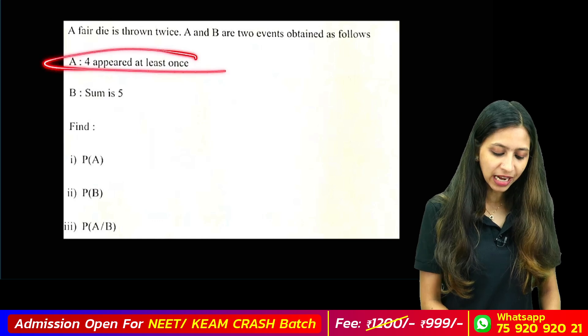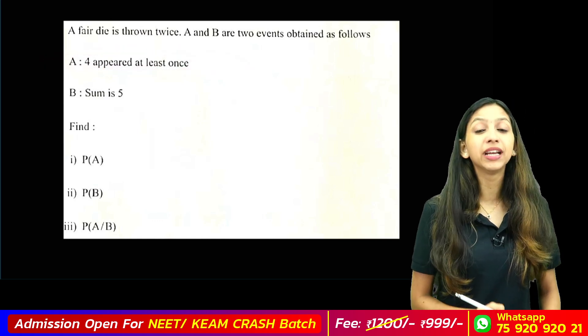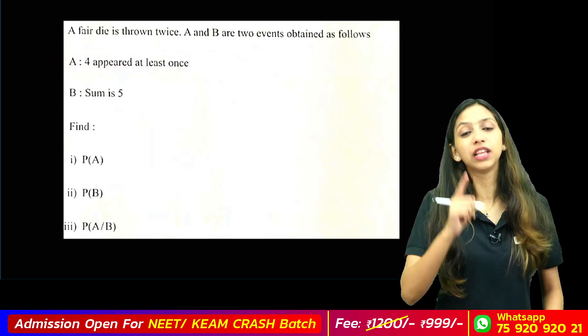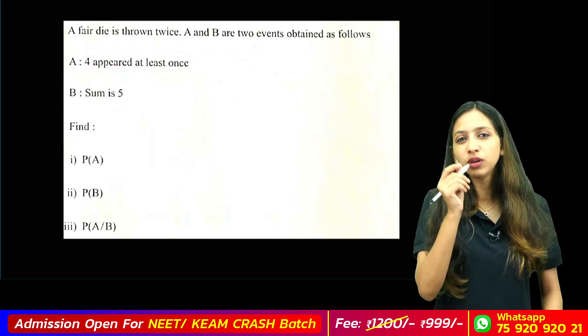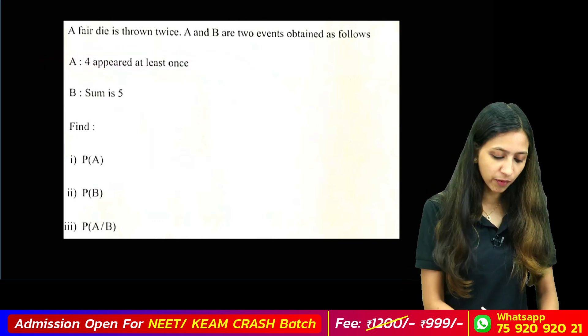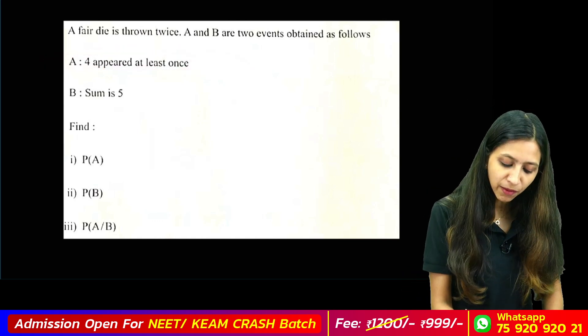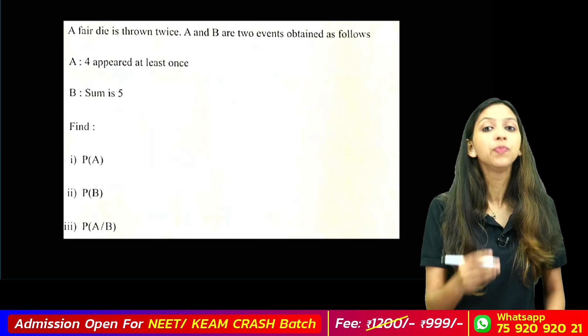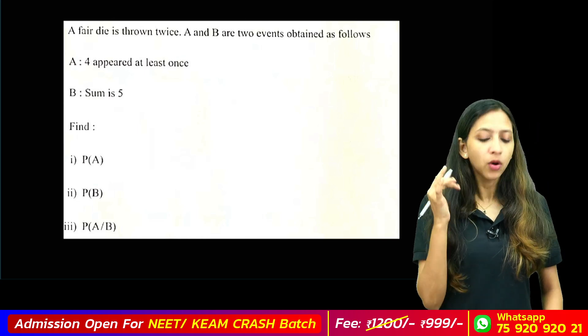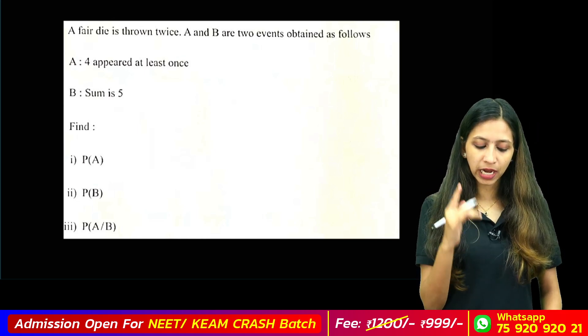In event A, 4 appeared at least once. This is the condition that 4 appears at minimum — the minimum is 4.